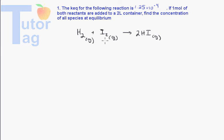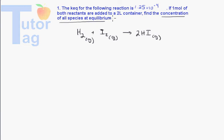Hydrogen plus iodine gives us hydrogen iodide. It's asking us to find the concentration of all species present at equilibrium. It's telling us that one mole of both of the reactants are added into a 2-liter container.